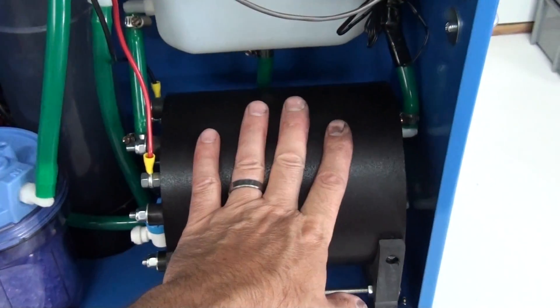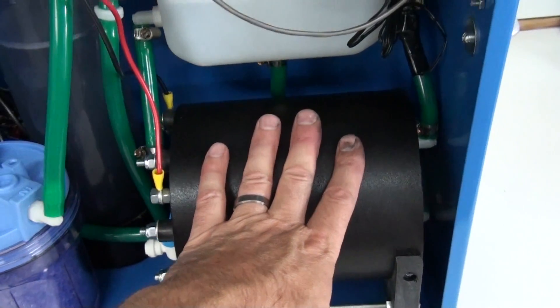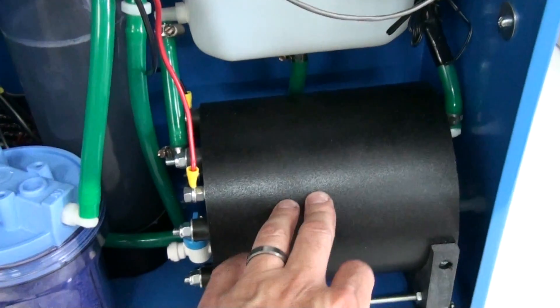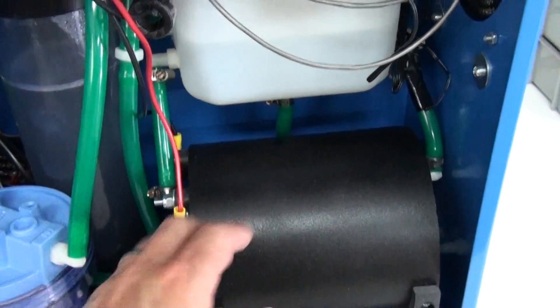Then from the reservoir there are tubes that lead down to the generator. This is the generator where the action happens, and it dissociates the water into hydrogen and oxygen.